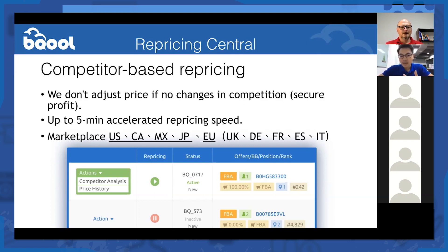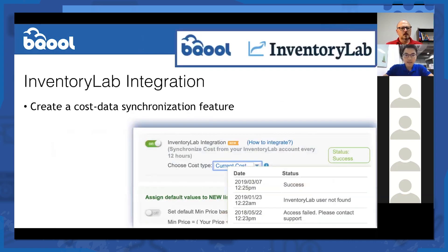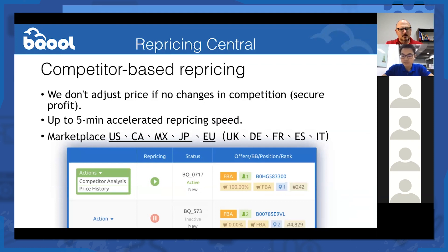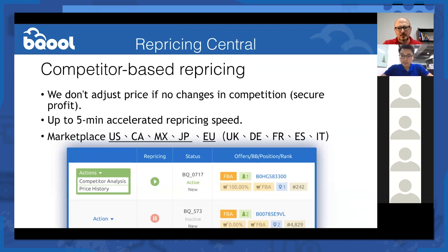We support US, CA, Mexico, Japan, and EU marketplaces. Can you go back a slide? I'd like to break that down further because there's a misconception in the Amazon community that Amazon only updates your repricing every 15 minutes. To say a repricer will do repricing on a five-minute basis is considered marketing hype. Can you dive deeper into the difference between five-minute and fifteen-minute repricing?